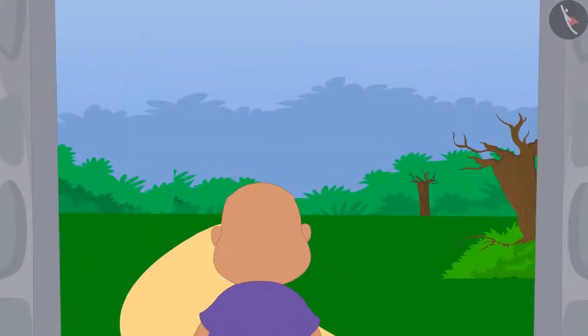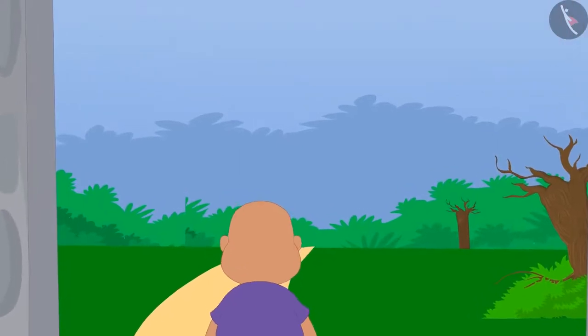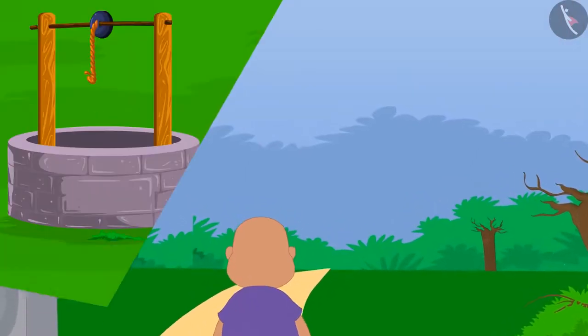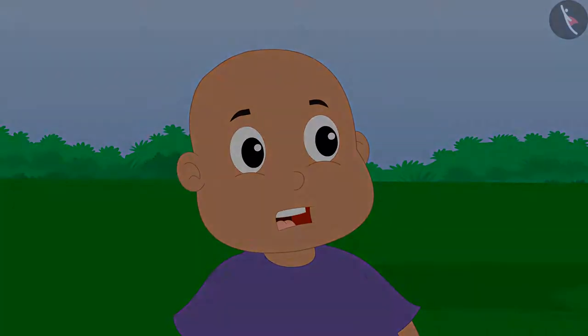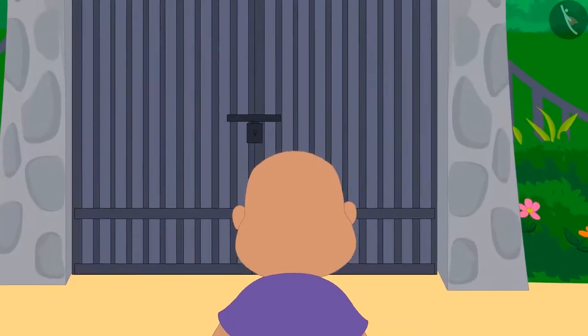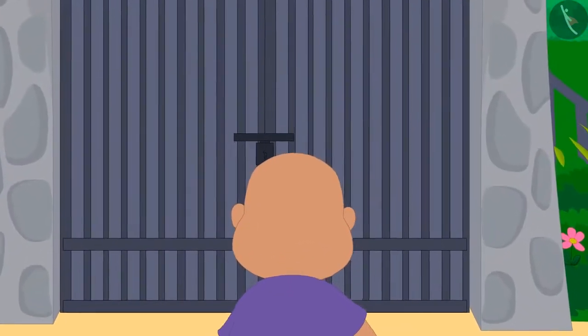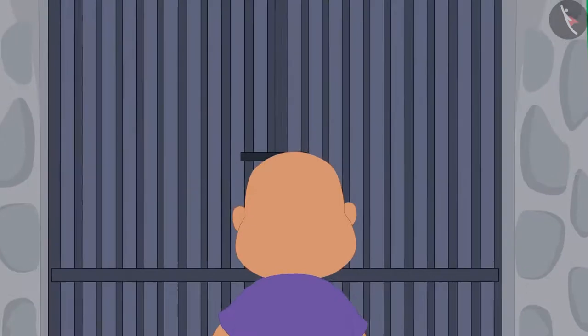Bablu was extremely naughty. He immediately went inside the village, but there was nobody in Ulta Pulta village. He got a little scared and wanted to come out of the same gate where he entered from, but it was closed.